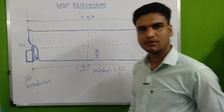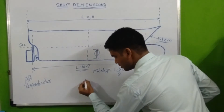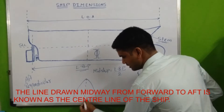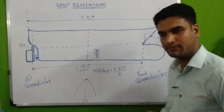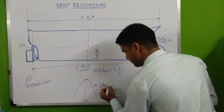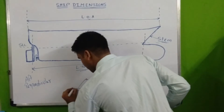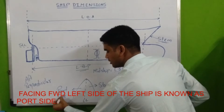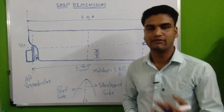Next is center line. Center line is drawn midway from forward to aft. With respect to the center line, facing forward of a ship, the right-hand side of the ship is known as starboard side, and the left-hand side of the ship while facing forward is known as port side. These terms are majorly used when we calculate listing of a ship, which we will discuss in our stability portion.